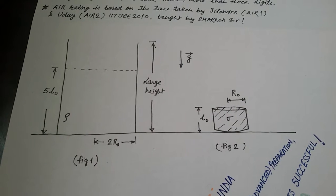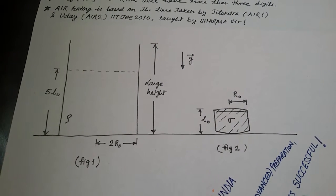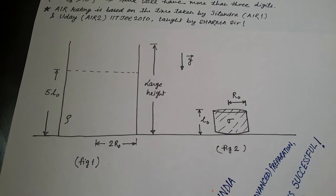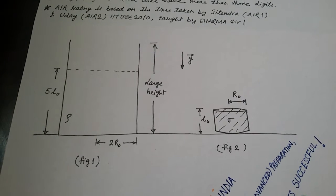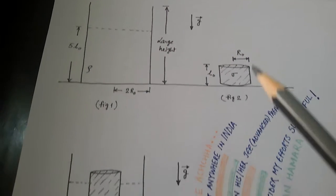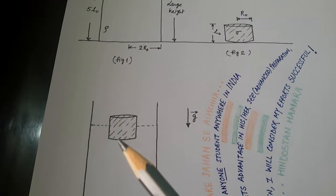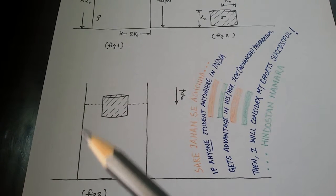Now the block is left inside the container to float on the liquid with its axis vertical, as a result of which level of liquid inside container rises. See figure 3. Now this block is placed inside, so this block is floating and the level rises.